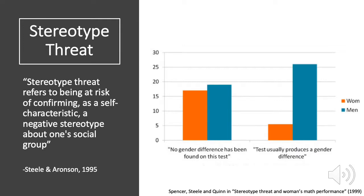These studies have been done with women in math, girls in math, differences between low and high socioeconomic backgrounds on intellectual tasks, men compared to women on social sensitivity, whites compared with Asian men in mathematics, whites with regard to appearing racist, and whites compared with blacks and Hispanics on tasks assumed to reflect natural sports ability. The effect of stereotype threat tends to be stronger among students who, one, wanted to perform well — so your motivated students are more likely to be subject to stereotype threat — and two, people who more strongly identify with the stereotype group tend to have a stronger stereotype threat effect.